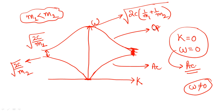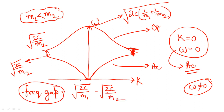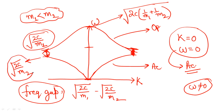When talking about the frequency gap, you need to find the frequency gap between both the branches. The frequency gap will be equal to root of 2c upon m1 minus root of 2c upon m2. You may expect a question about the frequency gap, so you should know the maxima and minimum values and exactly what the gap between these two values is. For the optical branch this value is root 2c upon m1, and for the acoustical branch it is root 2c upon m2.